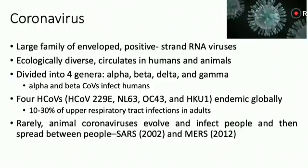What are coronaviruses? Coronaviruses are a large family of enveloped positive strand RNA viruses. These are ecologically diverse and circulate in humans as well as animals. They are divided into four genera. The alpha and beta coronaviruses are already known to affect humans and they cause up to 30% of upper respiratory tract infections in adults.